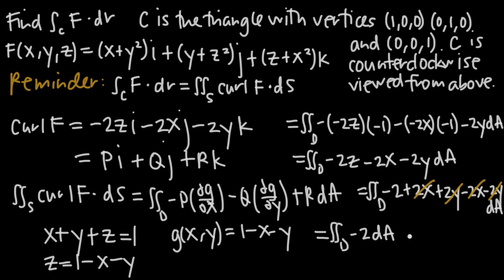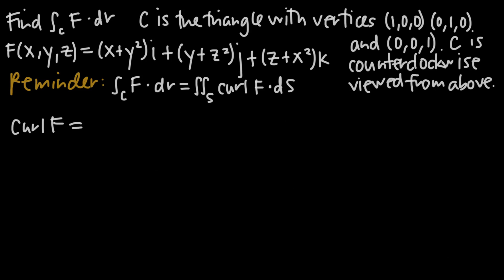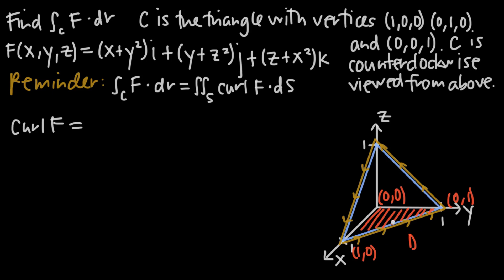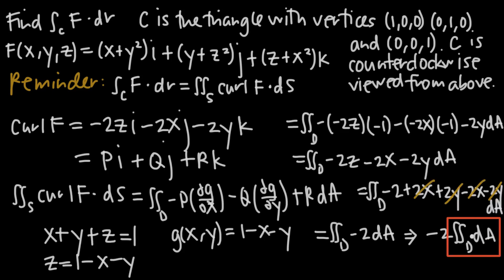The double integral over region d of dA just means the area of that projected triangle on the xy-plane. That triangle has vertices (0,0), (1,0), (0,1) — a right triangle with legs of length 1. Its area is ½ × 1 × 1 = ½. So the final result is −2 × ½ = −1.